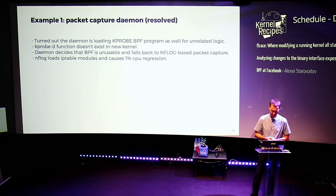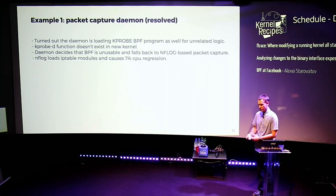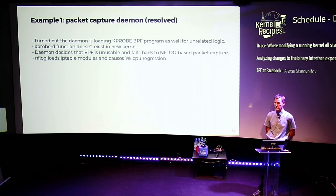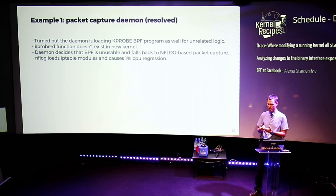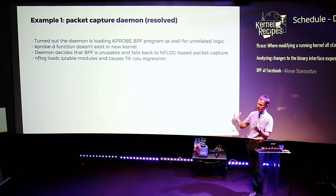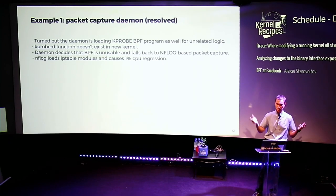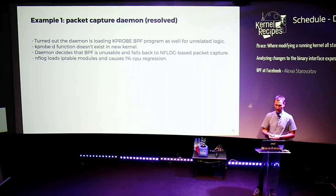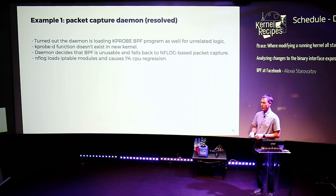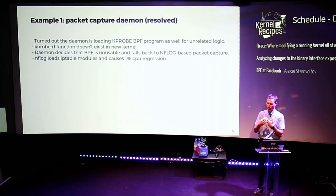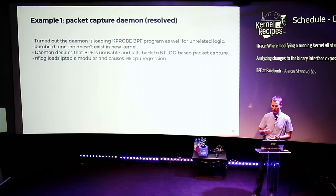We went to investigate. It turned out that this daemon, not only using the networking — the SCHED_CLS and attaching to the TC ingress program type — it's also using KPROBE for somewhat unrelated logic. And in a new kernel, this function simply disappeared. Because the daemon tried to attach to this KPROBE, it said the function is not there, and fell back to the old style written something like six years ago. With the old model, the way it was sampling packets was based on the NF hook infrastructure, loading all the iptables modules. iptables modules affect all the traffic, not only one out of the million. So we got this 1% CPU regression.